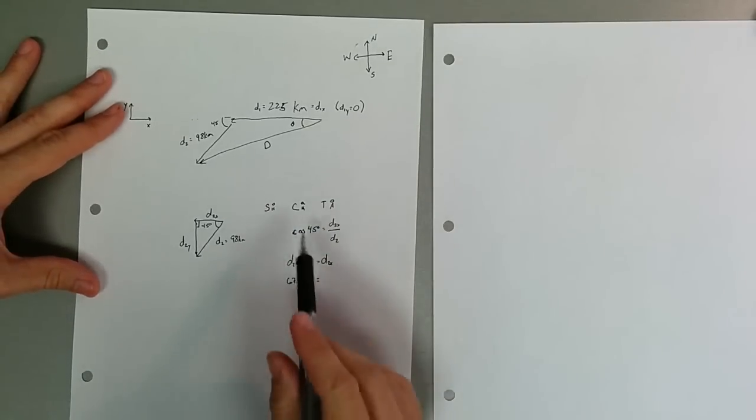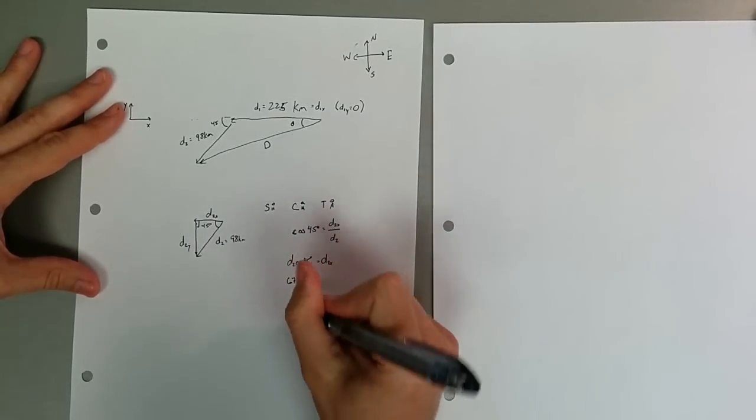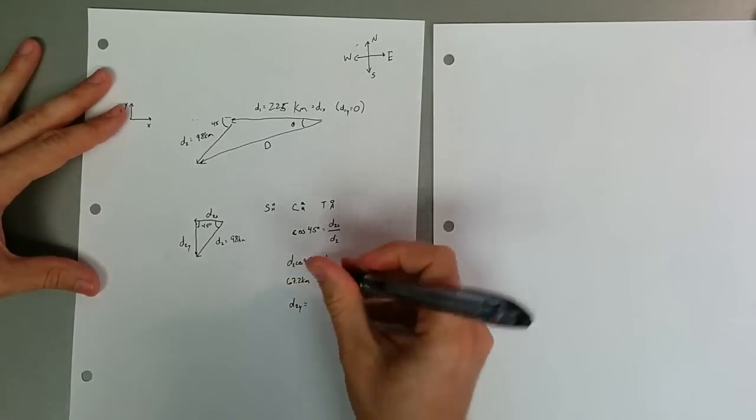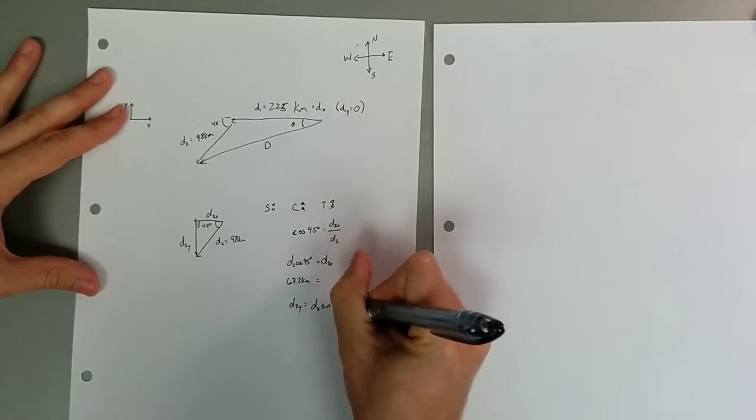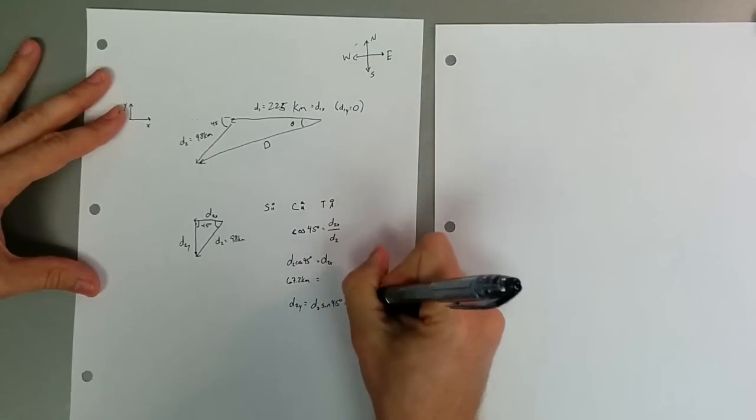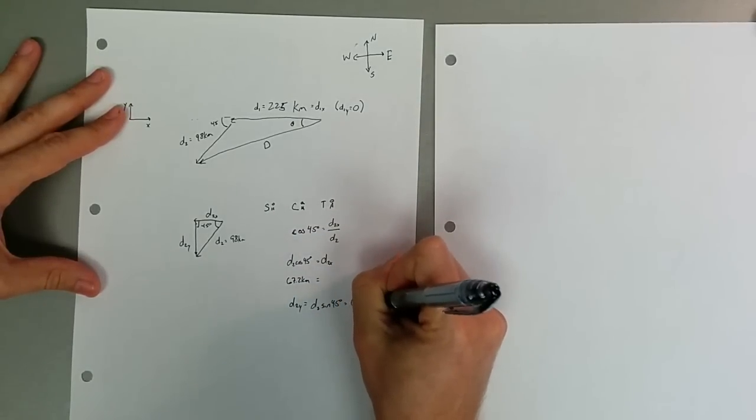Using a similar trick and using the sine to get this one, we can find that d2y is actually the same thing. In this case, it's d2 sine of 45 degrees. Turns out sine and cosine of 45 degrees are the same, and we just get 67.2 kilometers for that one as well.